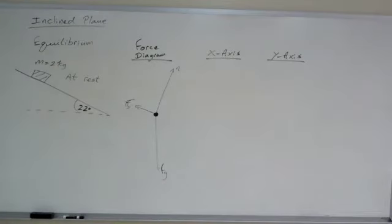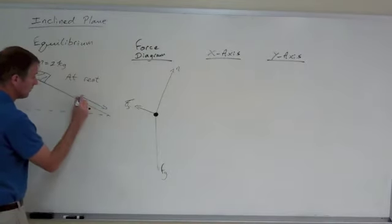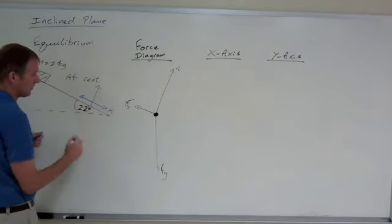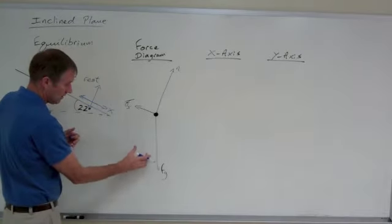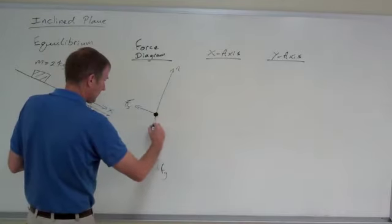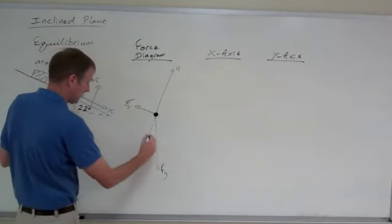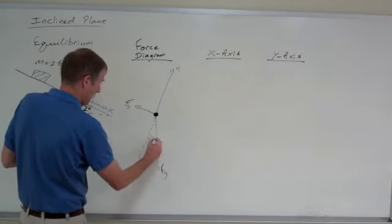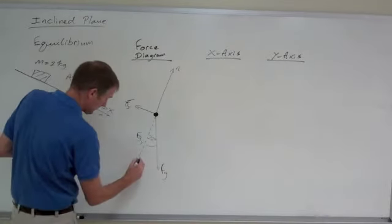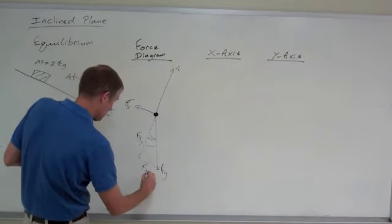We need to resolve, well we need to tilt our axes, so parallel to the ramp is the x-axis, perpendicular to the ramp is the y-axis. Resolve the vectors, the components of the weight, draw back from the normal force. If you do that, that angle is the same as that. That becomes FGY and downhill is FGX.